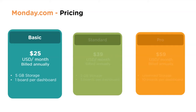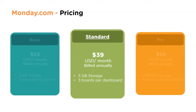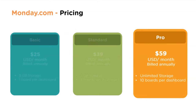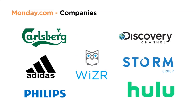The basic version is $25 per month, providing 5 GB storage and one board per dashboard, billed annually. The standard package includes 5 GB storage and three boards per dashboard at $39 per month billed annually. Professional includes unlimited storage and 10 boards per dashboard at $59 per month billed annually. monday.com customers include Carlsberg, Discovery Channel, Adidas, and Tom Phillips.